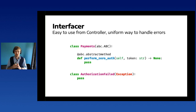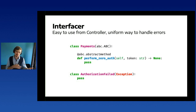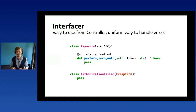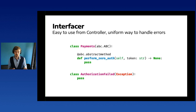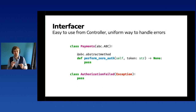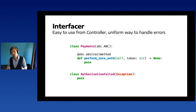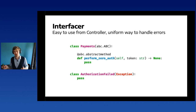Regarding the interfacer, our goal is to make it easy to use from the controller: limit the information needed and provide a uniform way to handle errors. One library raised exceptions; the other returned error values — so we introduce an abstract class interfacer with two implementations, one for each library. We also provide a simpler API: for example, 'perform_zero_authentication' that accepts fewer arguments. The fewer arguments a function accepts, the easier it is to read and reason about. An interfacer can also be as simple as a bunch of functions in a module — what matters is that the responsibility is covered.